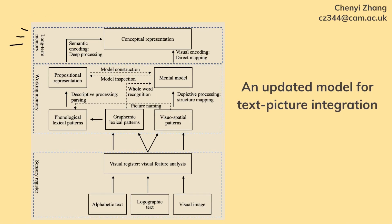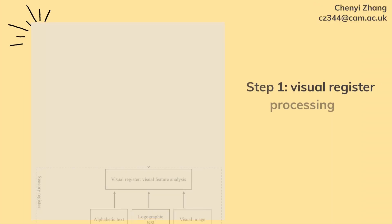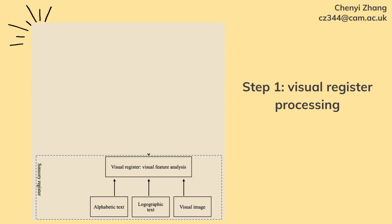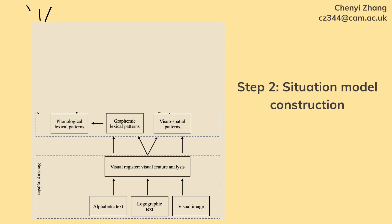Based on these results, we tried to develop an updated model for the text-picture integration process. There are three stages taking place in the sensory register, the working memory system, and the long-term memory system, respectively. I also split the alphabetic and logographic texts to explain the differences between the Chinese and English results. The first stage is the visual register processing, where the visual features of the texts and the images are processed. The activated patterns — namely the graphemic patterns, which are the visual alphabetic letters — and the logographic characters, and also the facial-spatial patterns in the images, are transmitted into the working memory system.